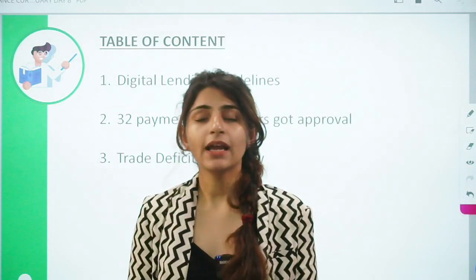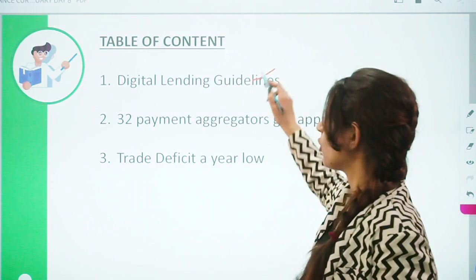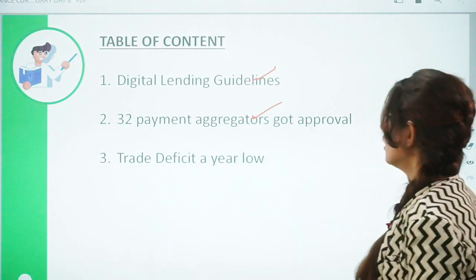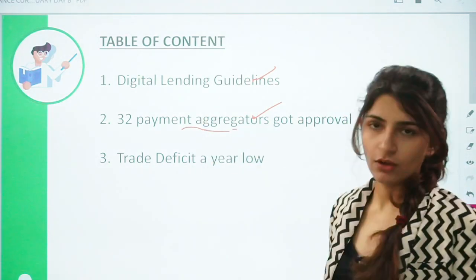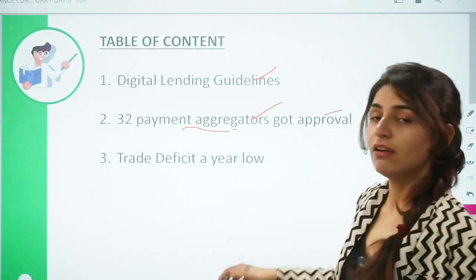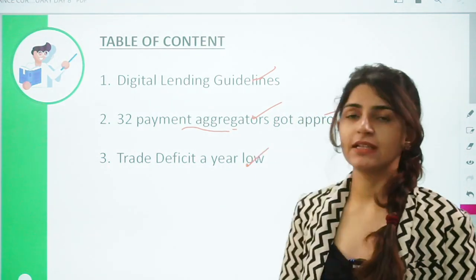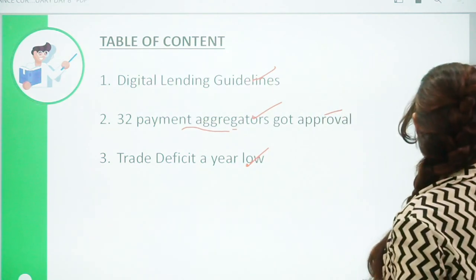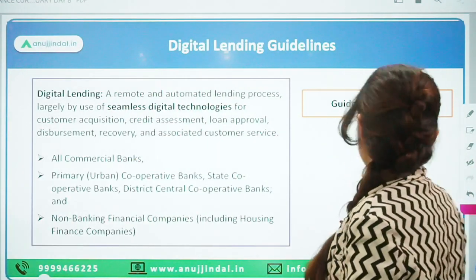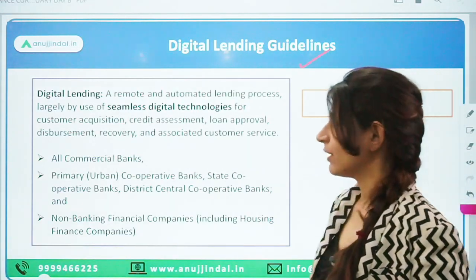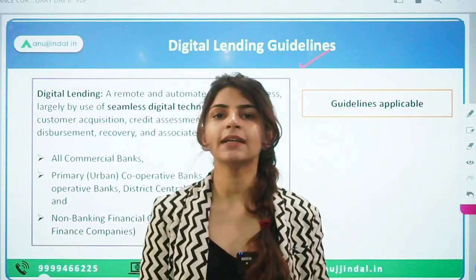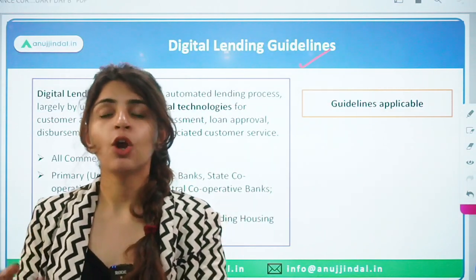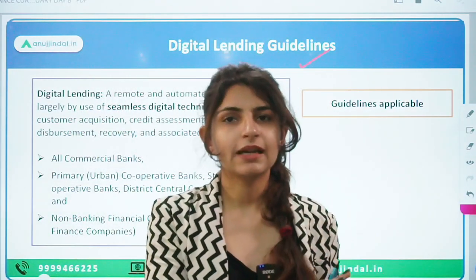RBI has given some clarification about certain concepts that will or will not be covered under digital lending guidelines. Secondly, 32 payment aggregators have got approval from RBI. Third, trade deficit has been the lowest in the month of January — we will understand what trade deficit means. RBI has also given clarification on transactions involving credit cards and debit cards — whether they will be governed under digital payment guidelines or under the master directions of debit and credit cards.